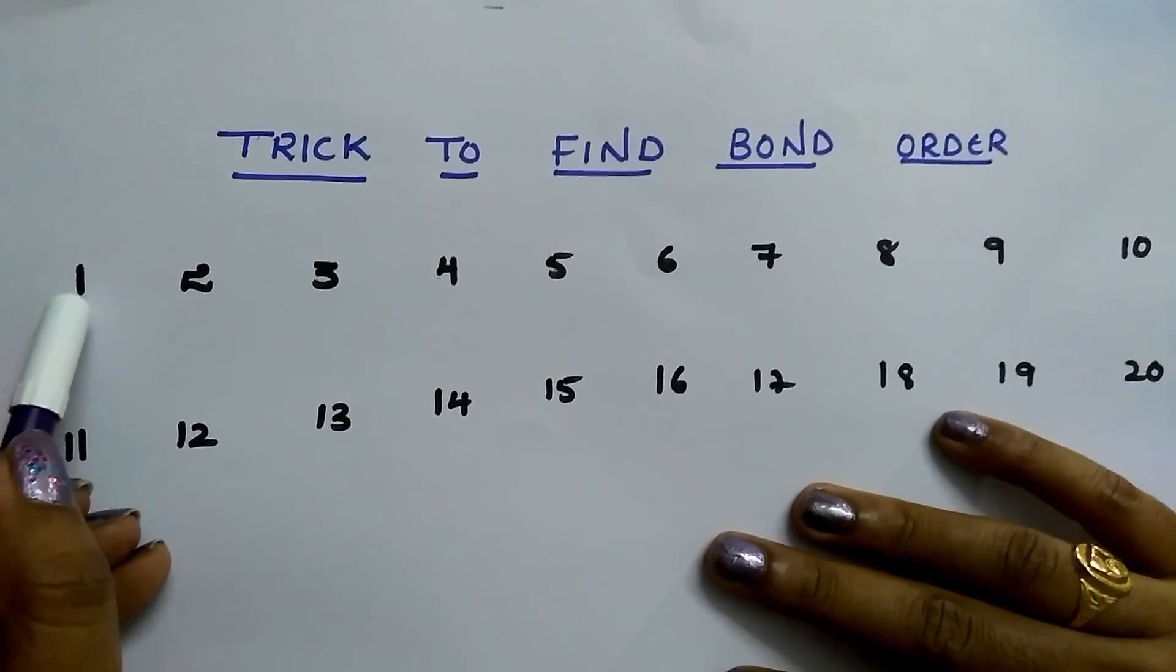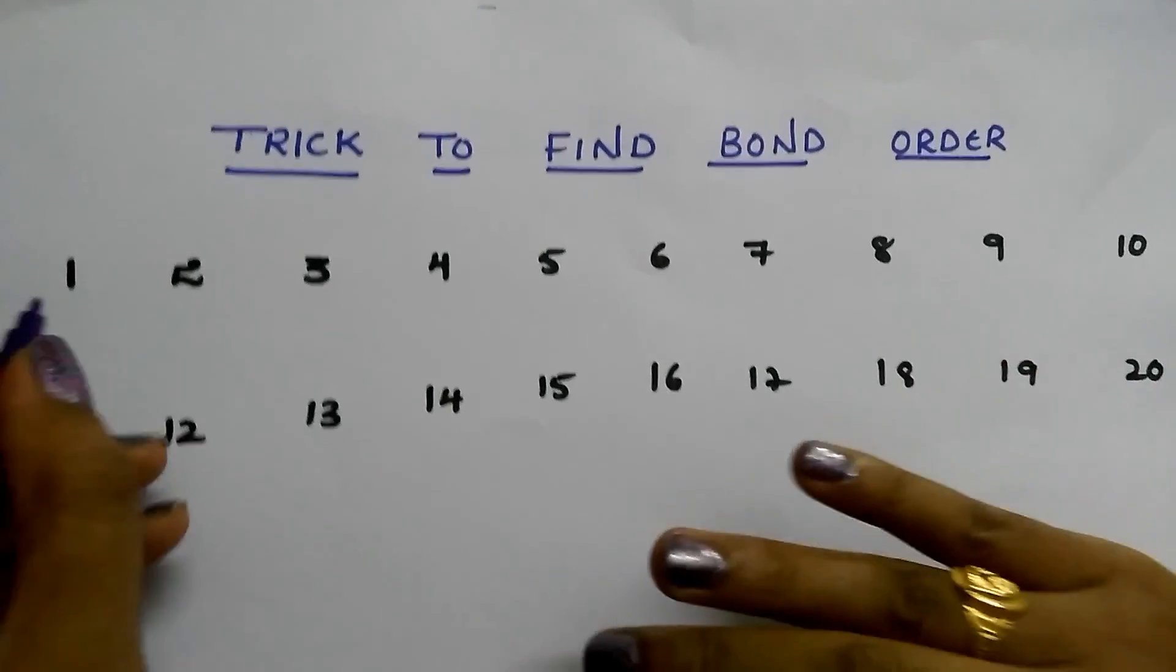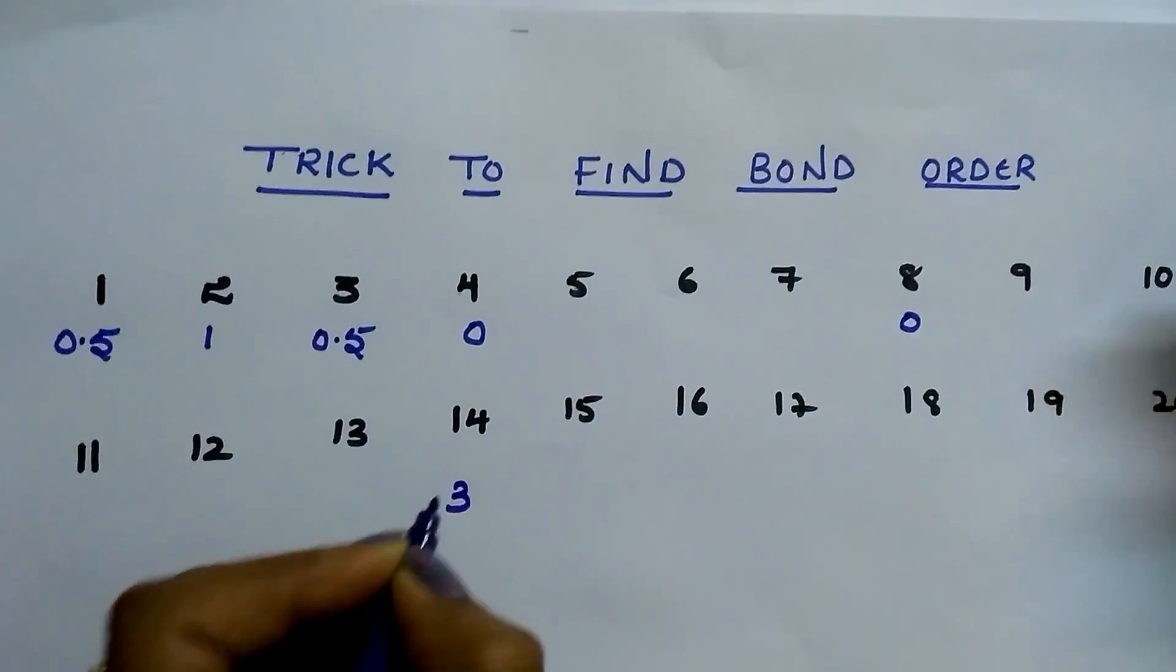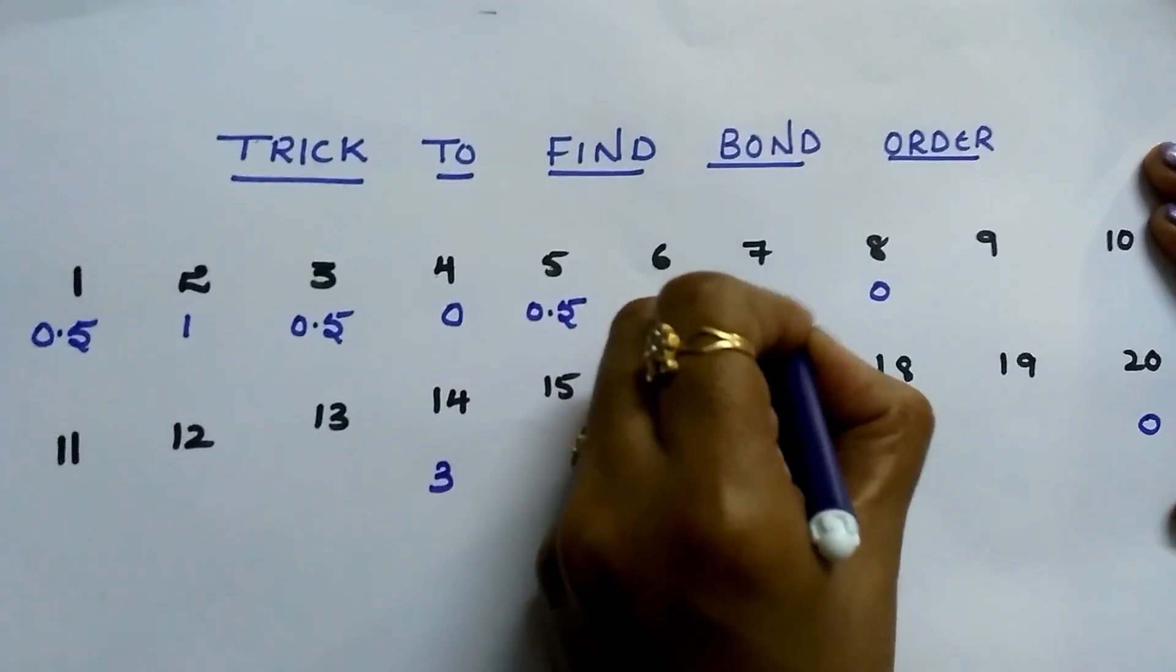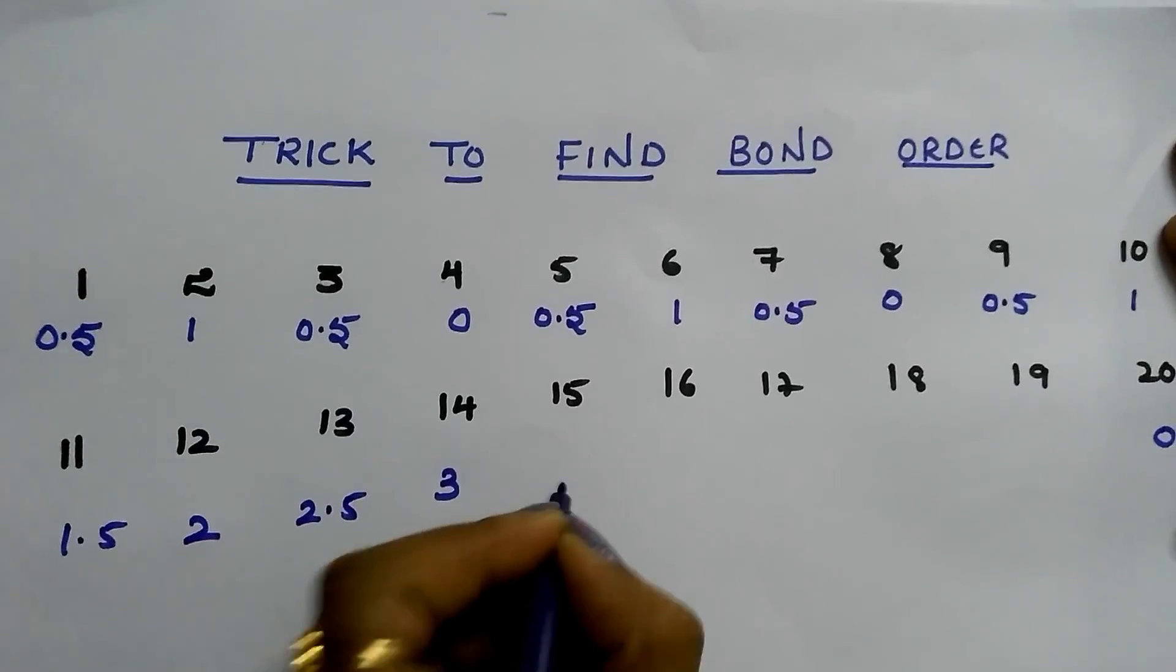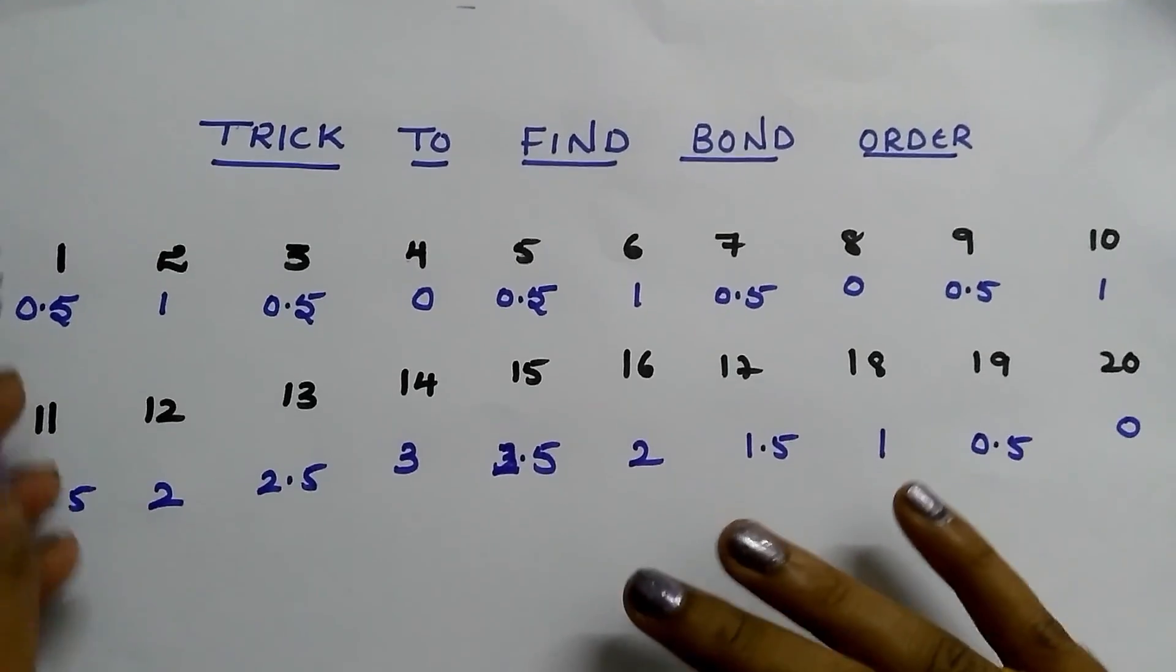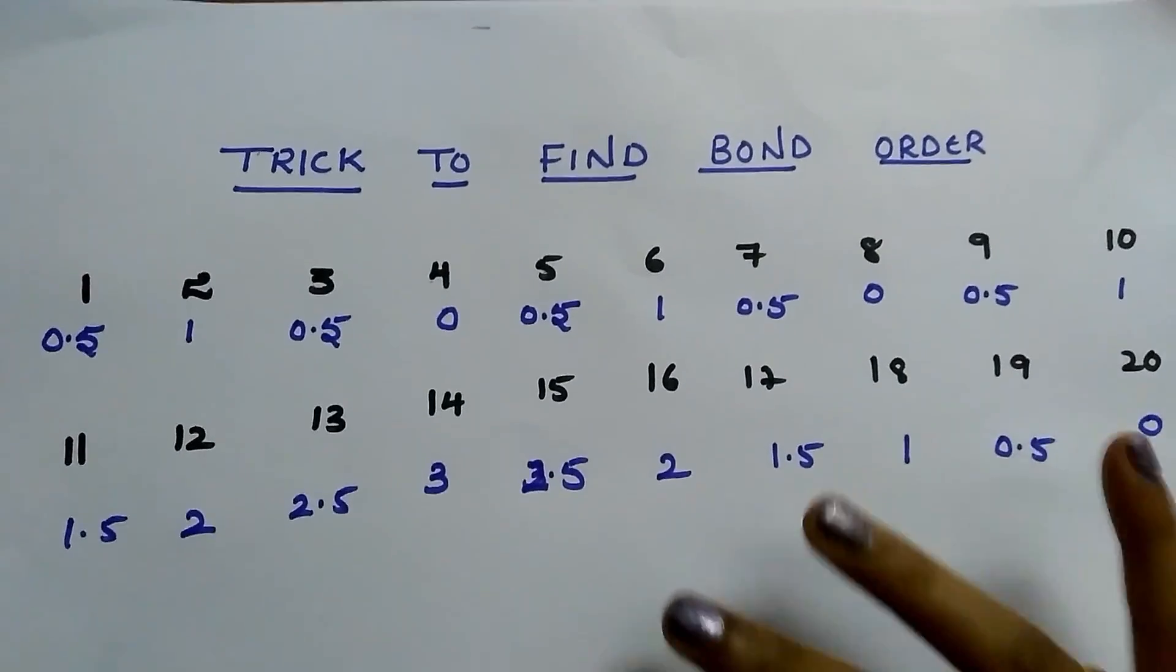First write the numbers from 1 to 20. After writing the numbers from 1 to 20, then write: 0, 0.5, 1, 0.5, 0, 0.5, 1, 0.5, 1, 1.5, 2, 2.5, 3, 3, 2.5, 2, 1.5, 1, 0.5, 0. Write like this - first write numbers 1 to 20, after writing that, write these values.